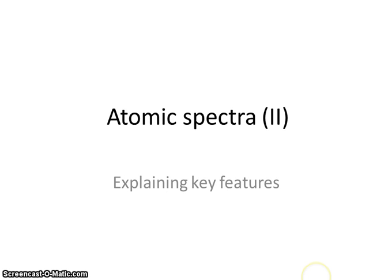This is the second video about atomic spectra. In the first video you saw how the Bohr model of the atom was used to explain how atomic spectra are formed. In this video we'll be looking at some of the key features of atomic spectra and how we can use the Bohr model in more detail to explain those features. I'll also be giving you some tips about how to ensure that your examination answers contain the correct level of detail.